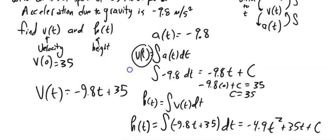So that is half of negative 9.8t squared plus 35t plus some c value. And what's great is I have some more information. A ball is thrown upward from a height of 3.2. This is telling me the height at time 0 is 3.2. So t is 0. That's convenient.